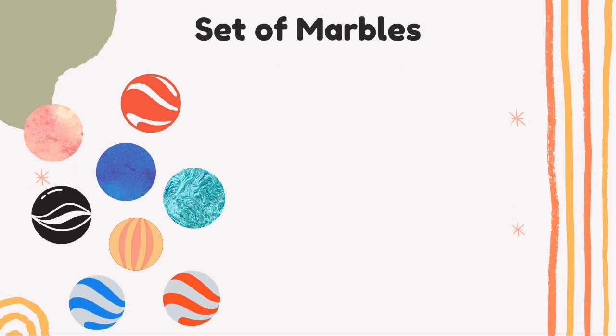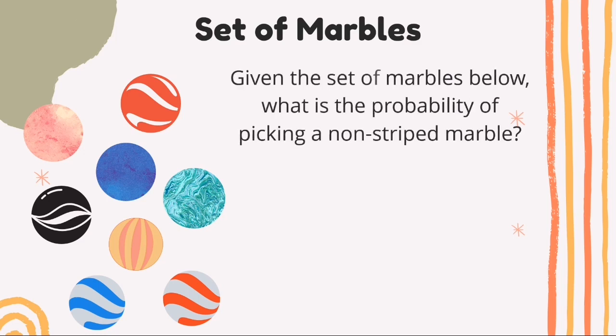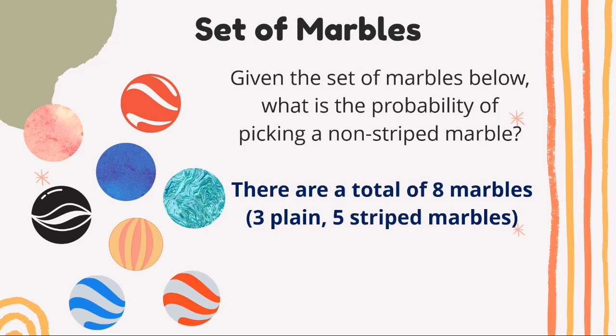This experiment is about a set of marbles. Given the set of marbles on screen, what is the probability of picking a non-striped marble? There are a total of eight marbles: three plain and five striped. Since there are three non-striped marbles, the probability is 3 over 8.